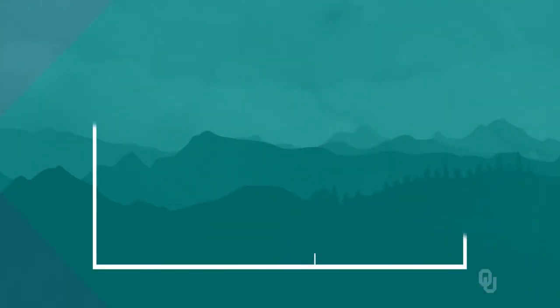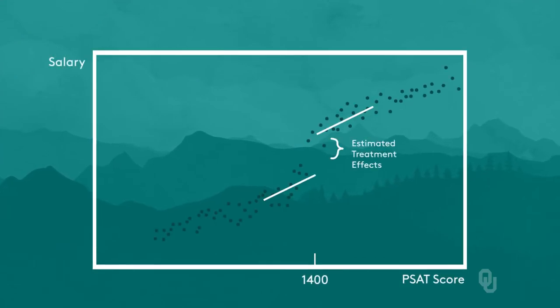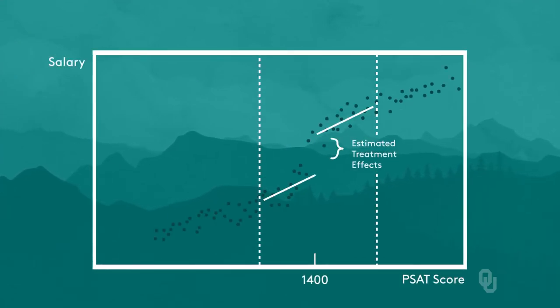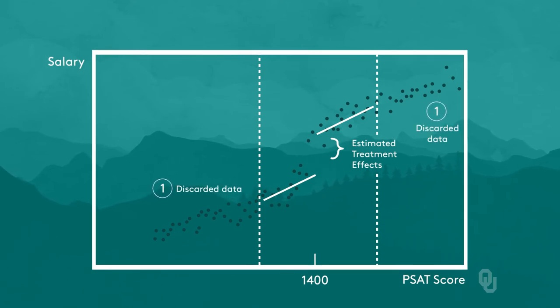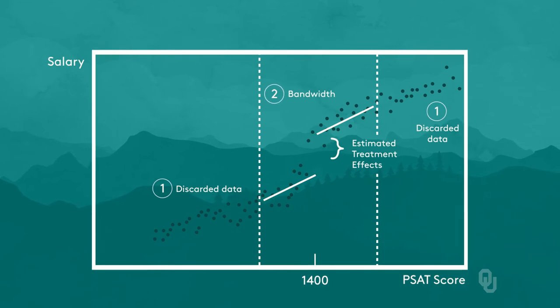Another option is to estimate separate polynomials on each side of the cutoff along with a dummy variable. Most RD papers will present several different estimations of the treatment effect. The nonparametric approach only uses data near the cutoff and runs a linear regression on the subset of the data. Analogous to the functional form issue in the parametric approach, here we have the issue of how much data to discard — or more formally, of choosing the bandwidth for the nonparametric model. Again, most papers will present results from several different bandwidth choices.